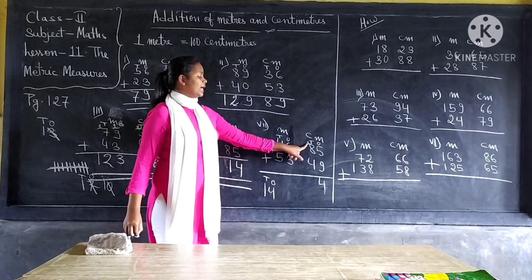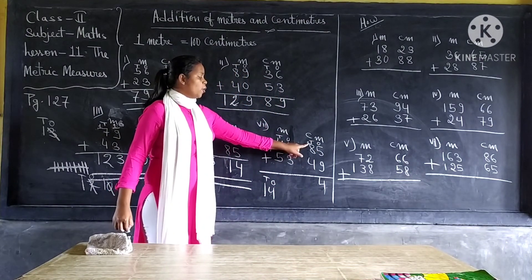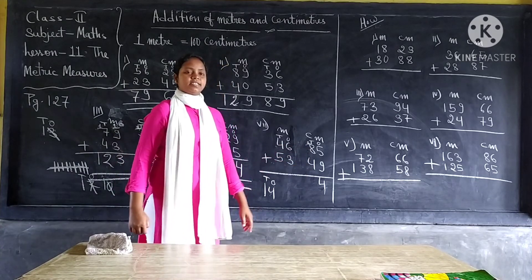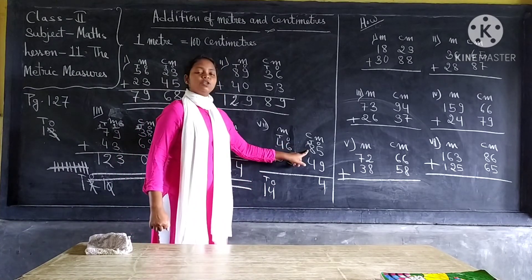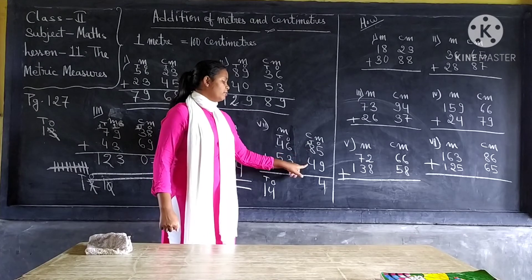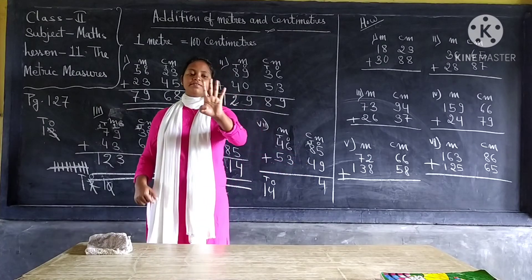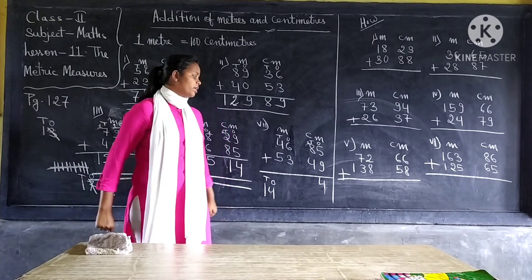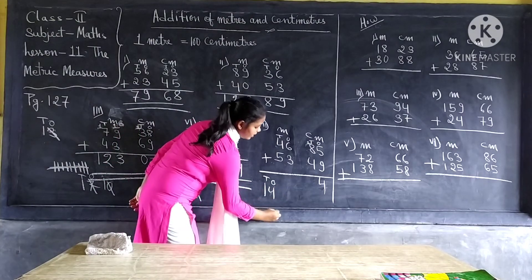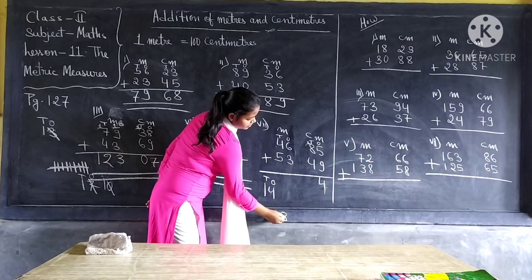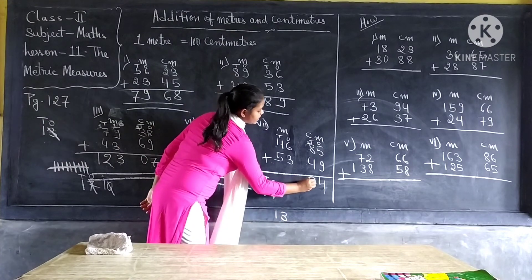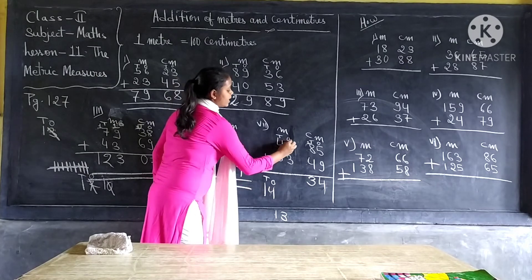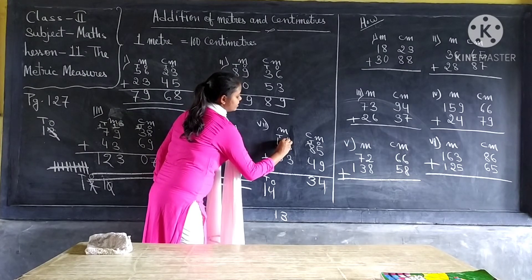Under tens of centimeters, we can see one ten plus eight tens plus four tens. One plus eight equal to nine, and nine plus four equal to thirteen. We got thirteen but we cannot write thirteen directly. This three we will write here, and this one we will write it under the meter.